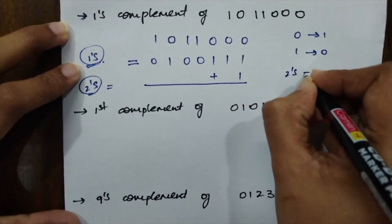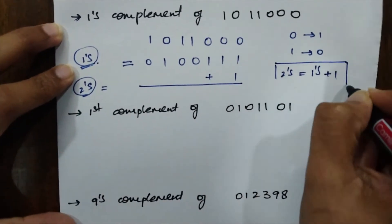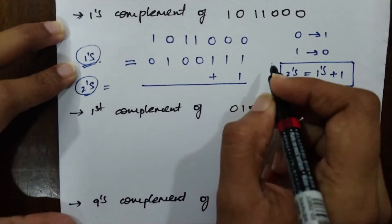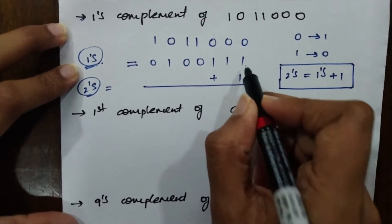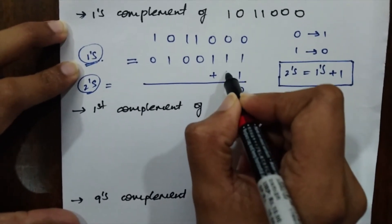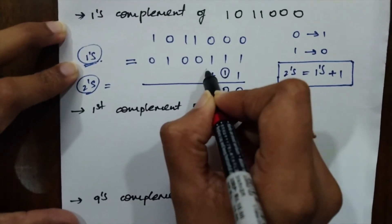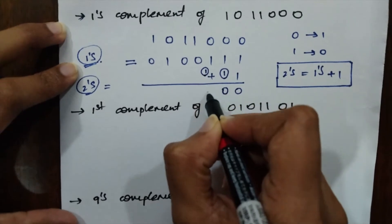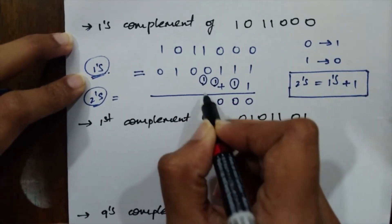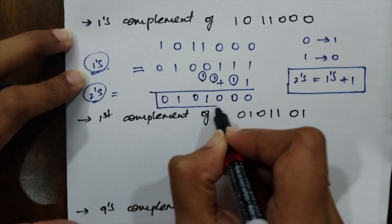To find the 2's complement, always add 1 to the 1's complement. So: 2's complement = 1's complement + 1. Adding 1 to 0100111: 1+1=0 carry 1, 1+1=0 carry 1, 0+1=1, then the remaining digits are 0, 0, 1, 0. The 2's complement is obtained.